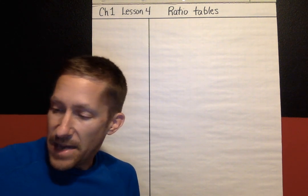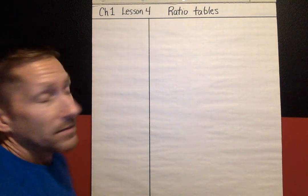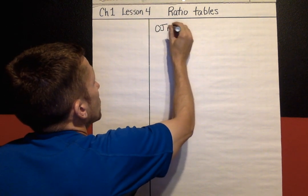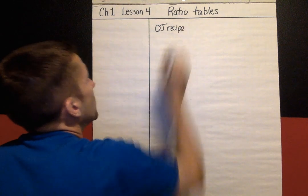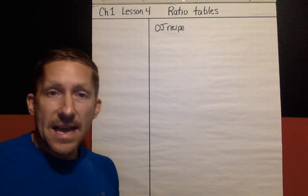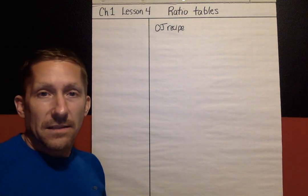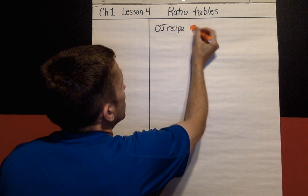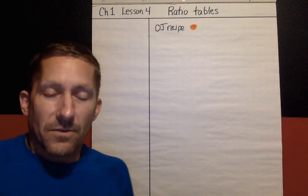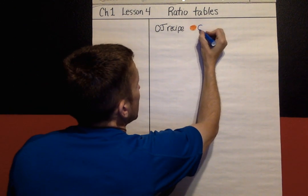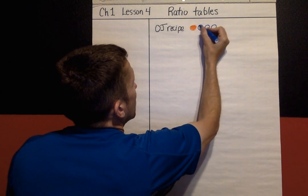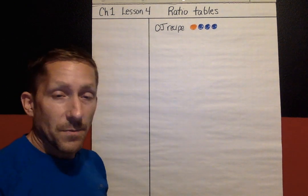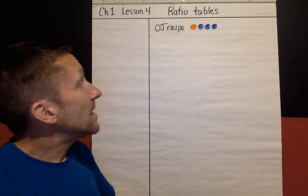To get started, I'm going to talk about something many of you have probably done before — making orange juice. An OJ recipe, if you buy orange juice in a can, is something like this: one can of OJ, shown with an orange dot, you dump the OJ into a container, and then you need three cans of water to make it taste good — not too orangey and not weak.